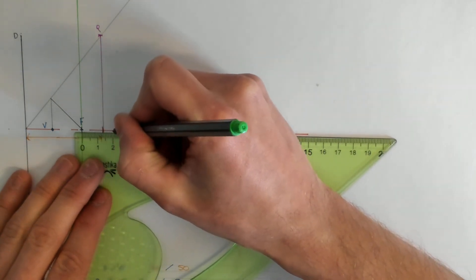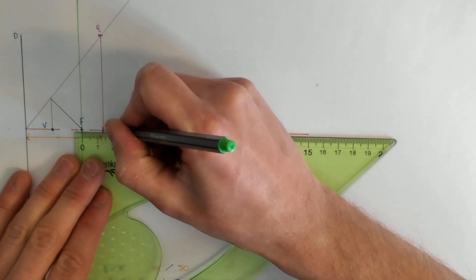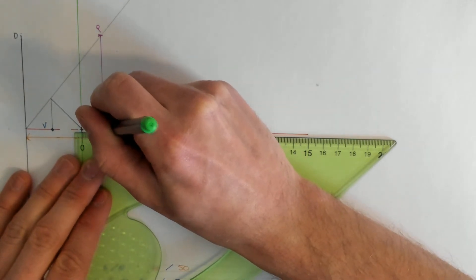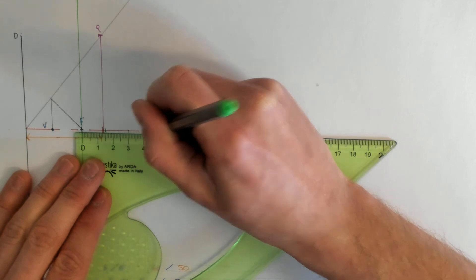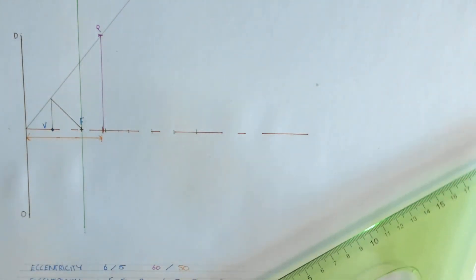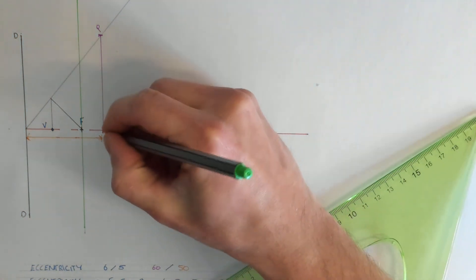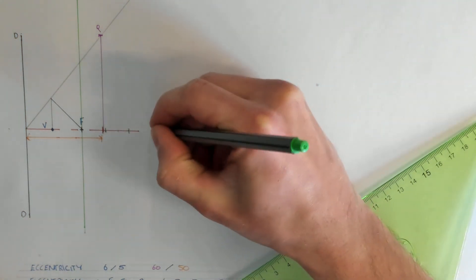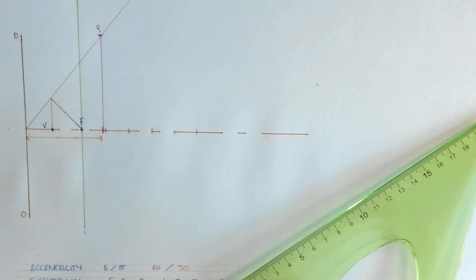I'll start at F. So every 15mm: 15, 30, 45, 60, and 75 - that will be enough points. So I'm making a little notch every 15mm from the focal point.